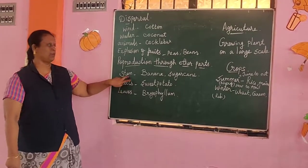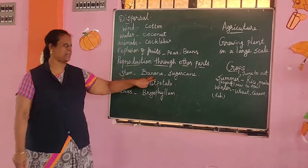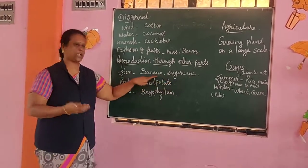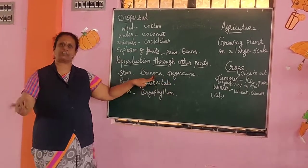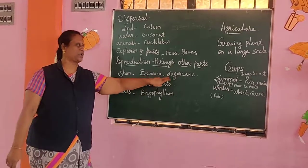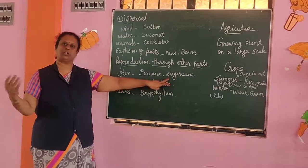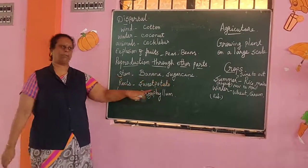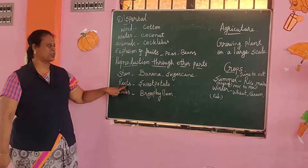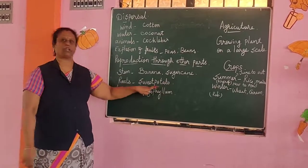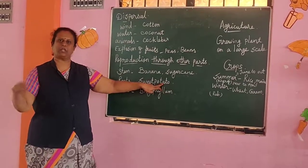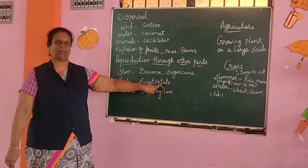Stem reproduction — for example, banana and sugarcane. New plants grow from the stem. Root reproduction — for example, sweet potato. A new plant grows from the root.